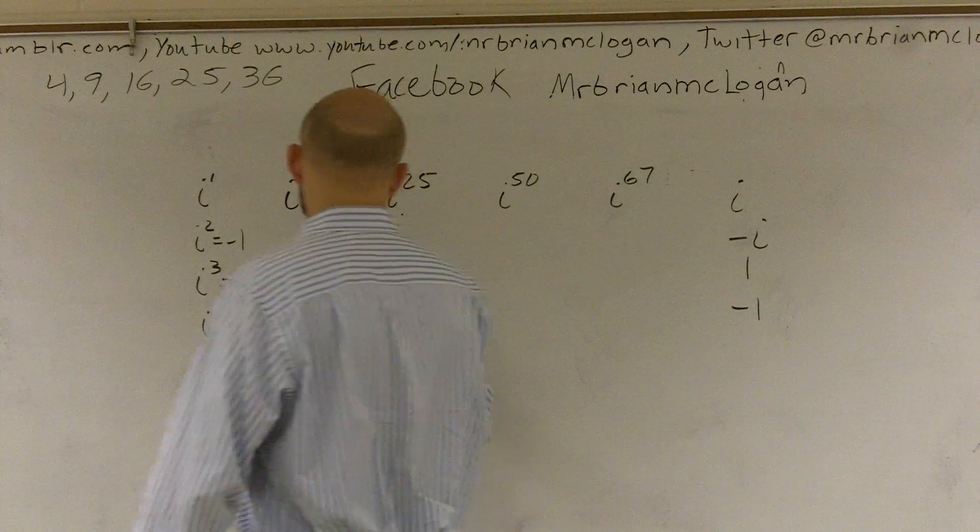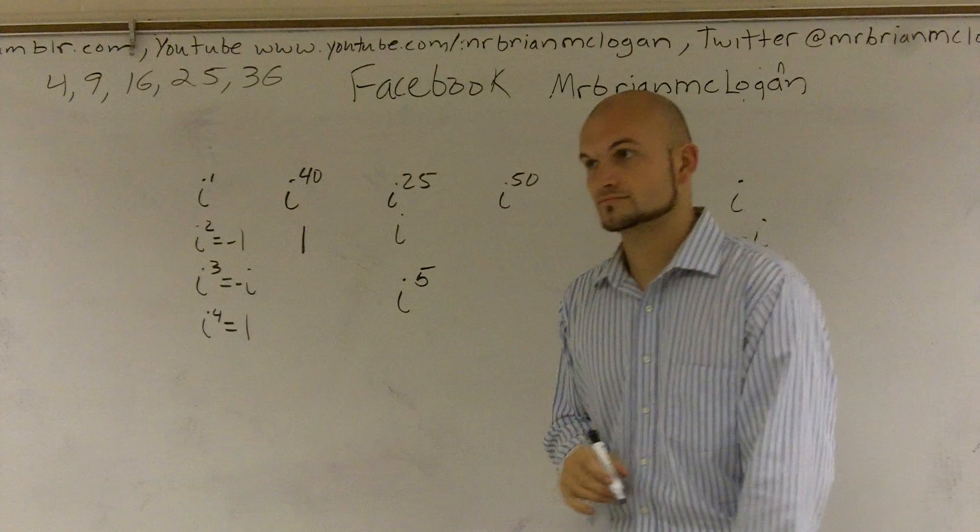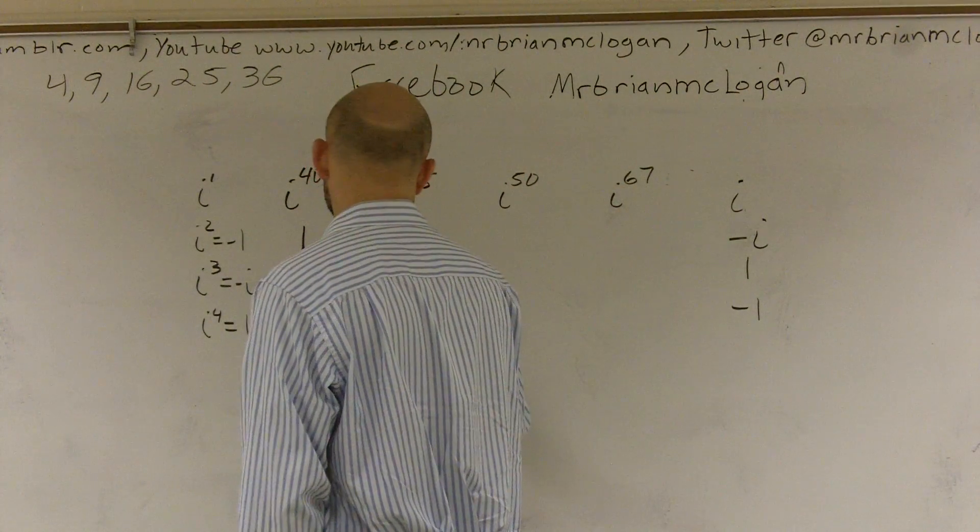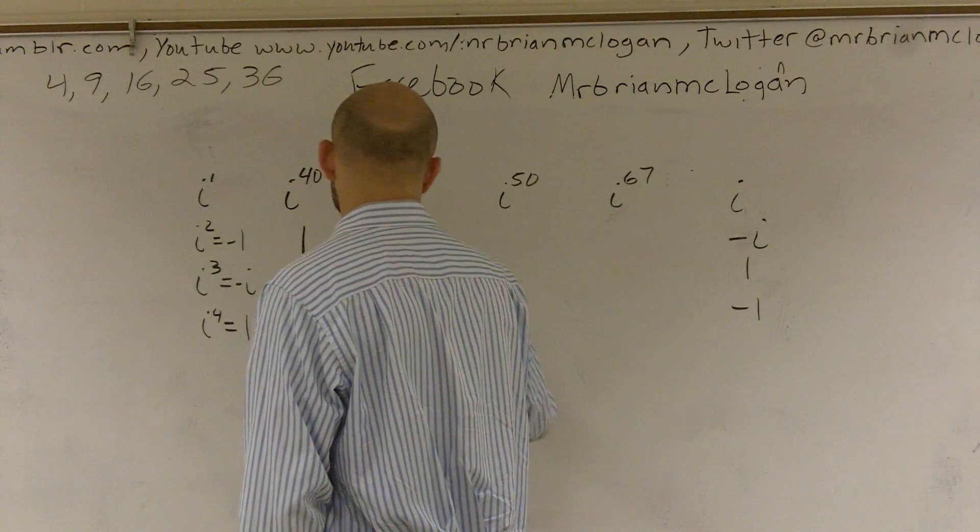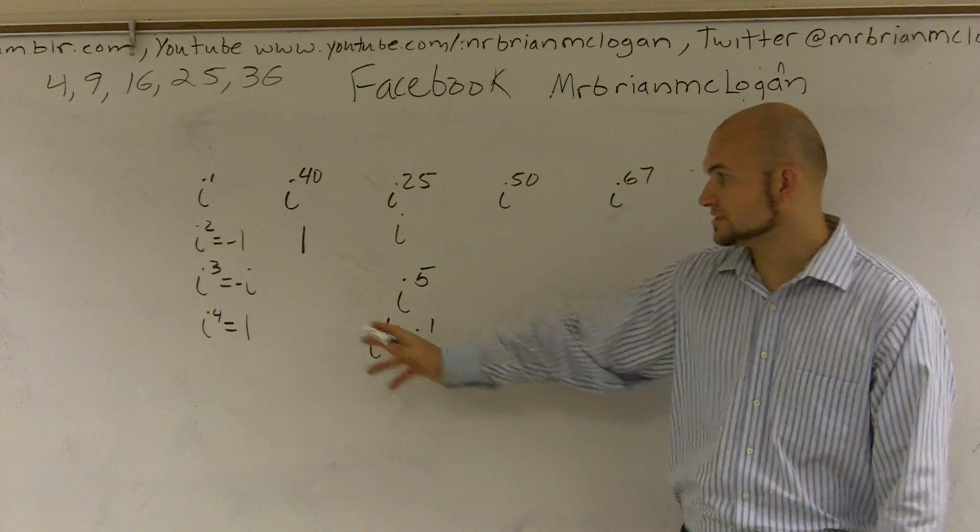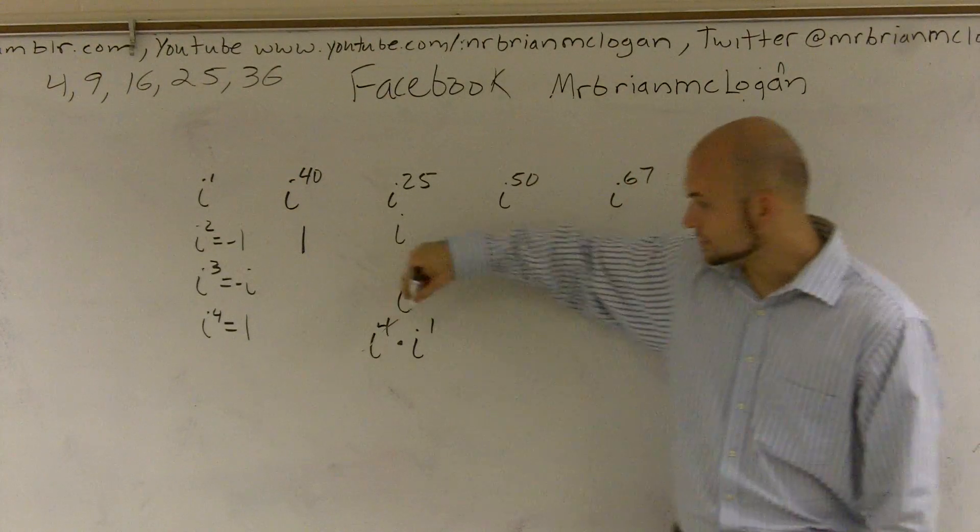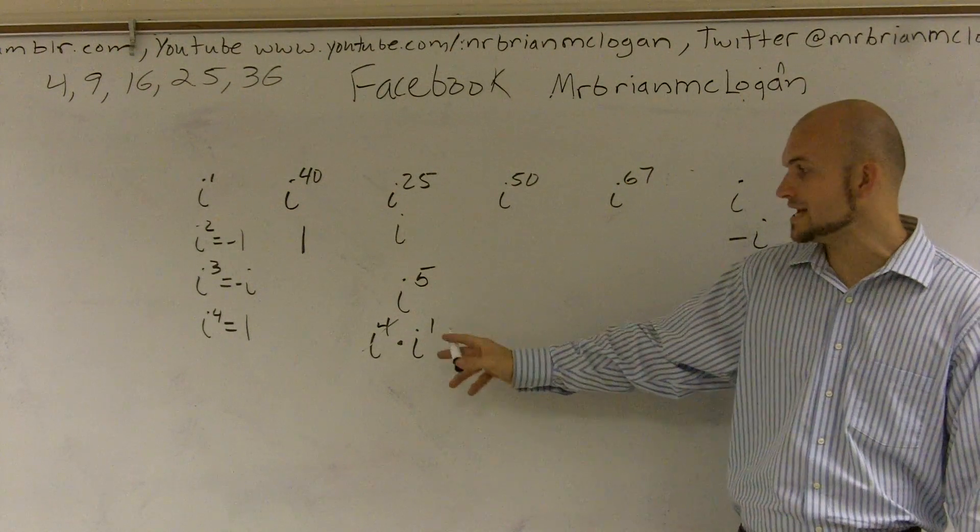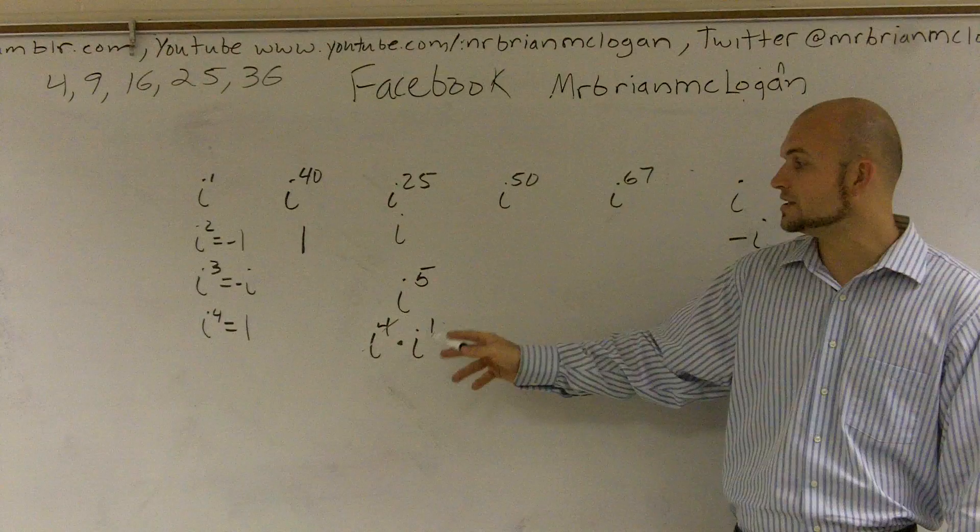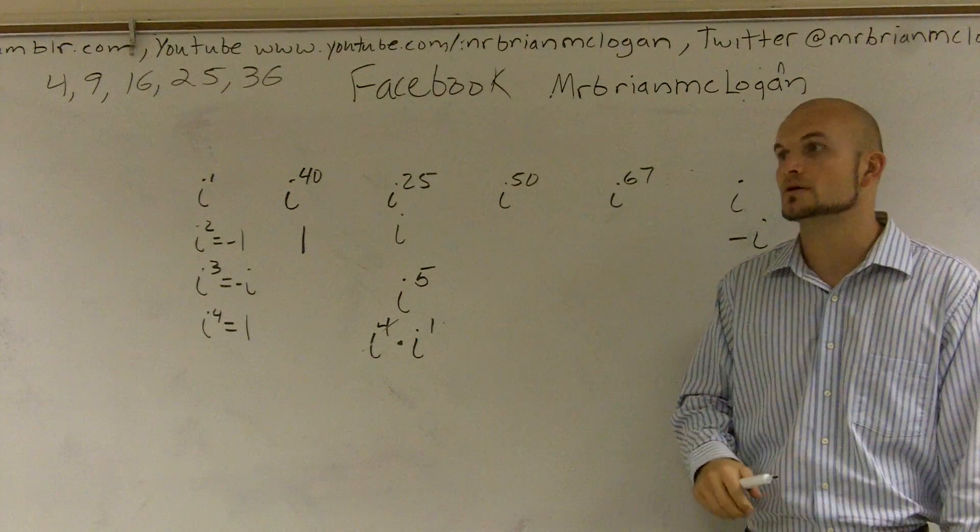Let me put it to you this way. Let's add an i to the fifth. You can write i to the fifth as i to the fourth times i to the first power. Well, i to the fourth is just one, right? And then you're just left with i to the first power. So you just take what the remainder is. You're just going to take what the remainder is, and that's going to tell you what you can rewrite that power as.